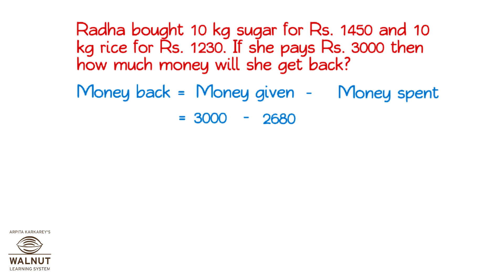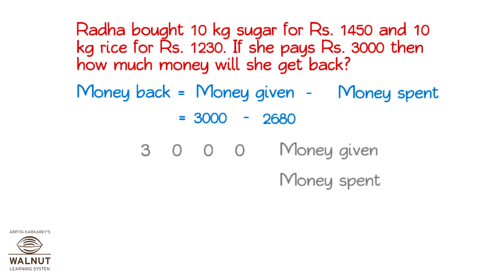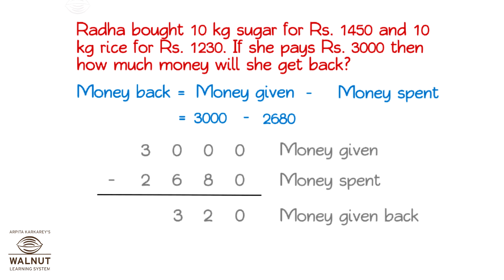Now, we have to find the money that comes back. The money given minus the money spent is the money that comes back. Let's do the subtraction. Radha gets back rupees 320.